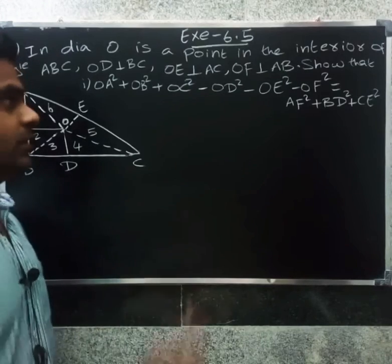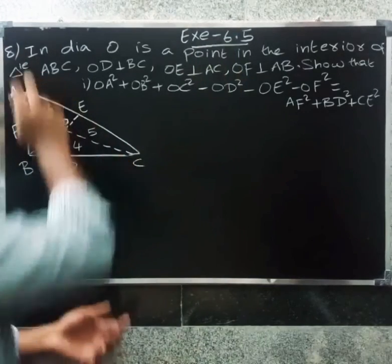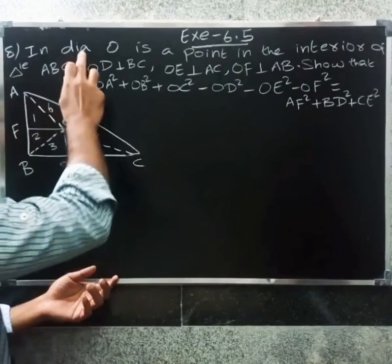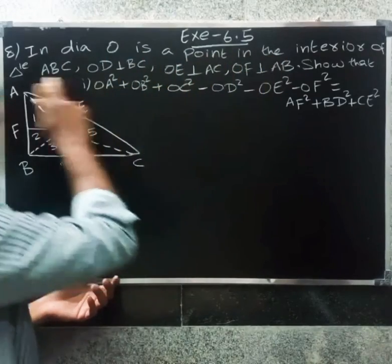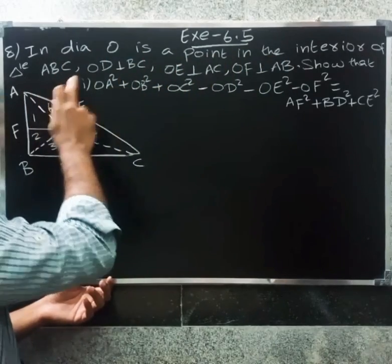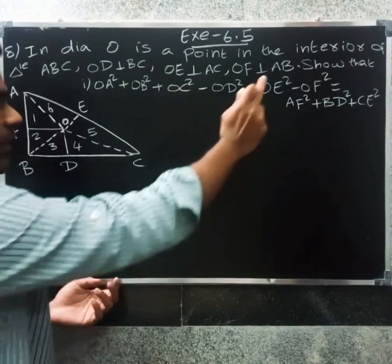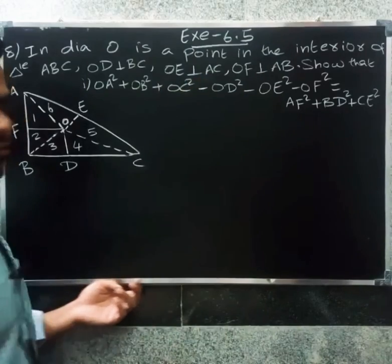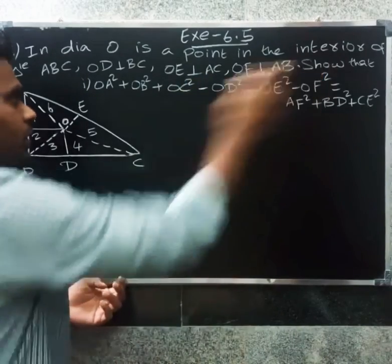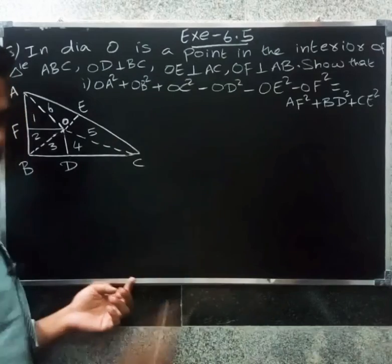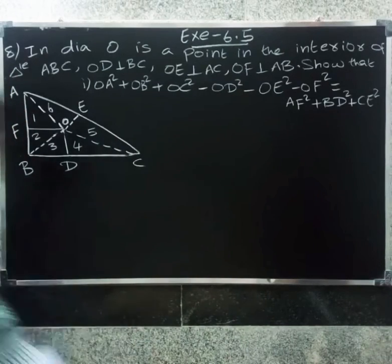Welcome friends. In Exercise 6.5, Question 8: In the diagram, O is a point in the interior of triangle ABC. OD is perpendicular to BC, OE is perpendicular to AC, OF is perpendicular to AB. We need to show the proof for this one. Now the diagram is marked as given.